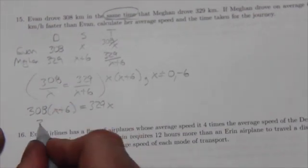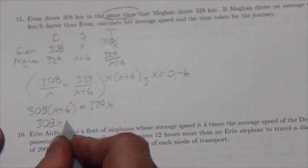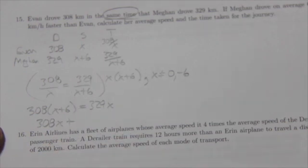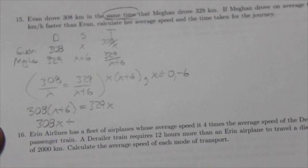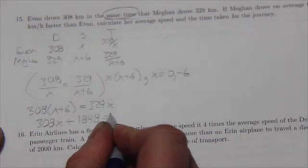Now over here this is going to be 308X plus, and I actually got to do this on the calculator here, that's going to be 308 times six is, if I'm reading that right, 1848 equals 329X.